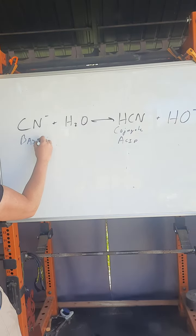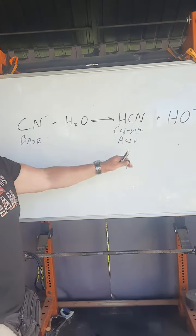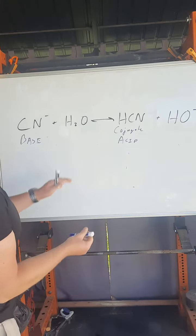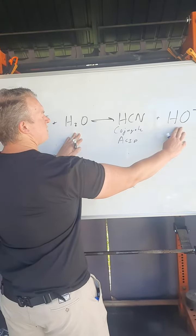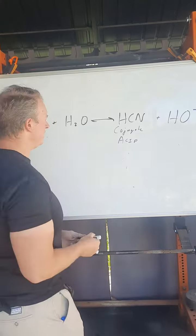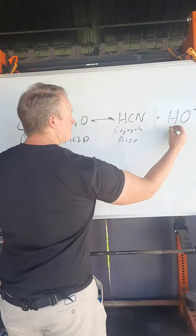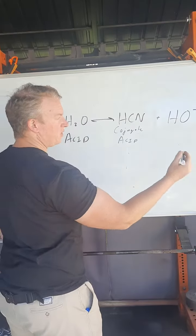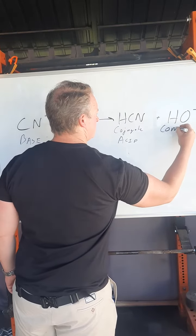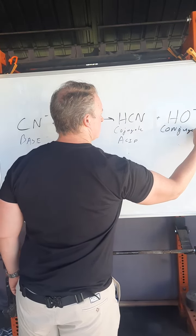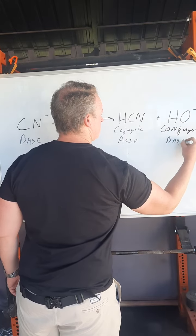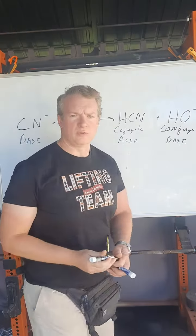Okay, if this is our conjugate acid-base pair, only differing by a proton, this one has more protons so this one must be the acid. And this one is a product and has less protons, so it's the conjugate base. Hope this helps, thank you.